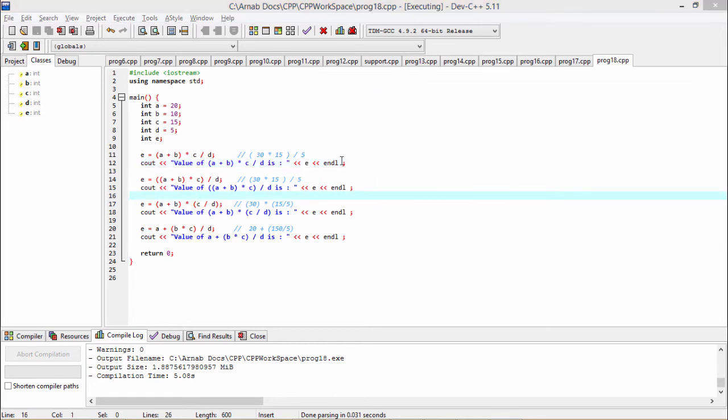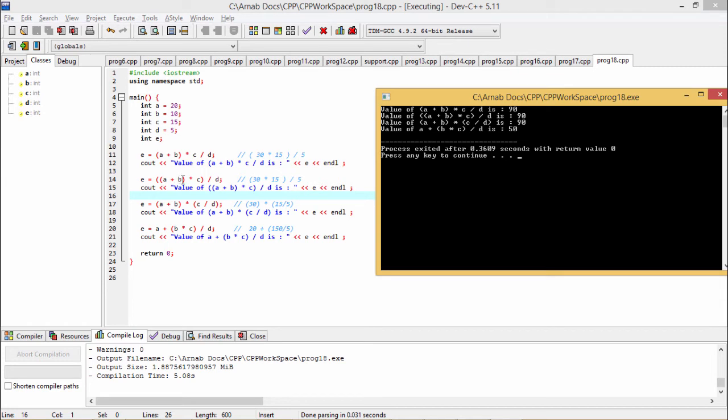Now in the second case, you are finding this one as A plus B, that is 30 into C, that is 30 into 15, that is 450 by D. D here is 5, again we are getting back this 90 as output. In case of the third one, A plus B is 30 and C by D is 15 by 5 is 3, 30 into 3, 90 will be the output respectively.